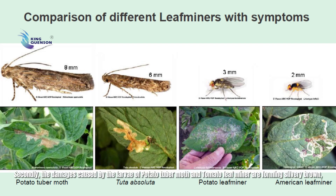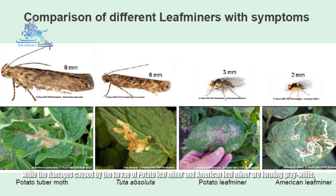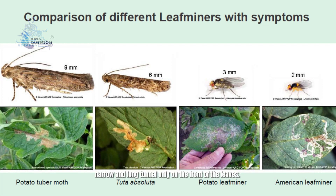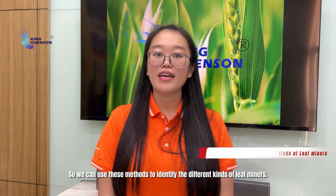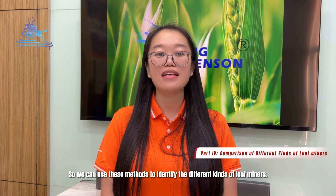Secondly, the damages caused by the larvae of potato tubermouth and tomato leaf miner form silver-brown, short and wide worn holes on both sides of leaves, while the damages caused by the larvae of potato leaf miner and American leaf miner form grey-white, narrow and long tunnels only on the front of the leaves. So we can use this method to identify the different kinds of leaf miners.